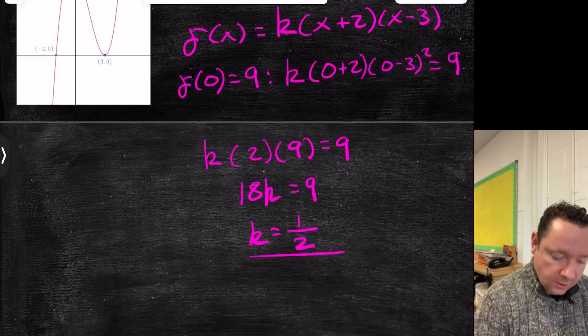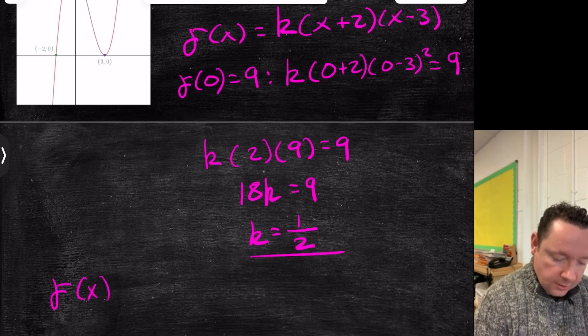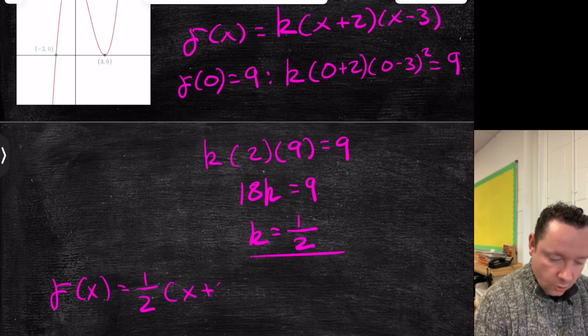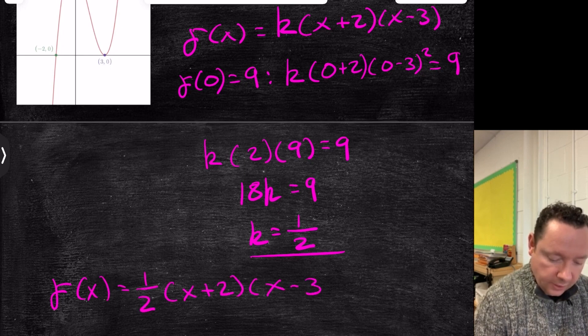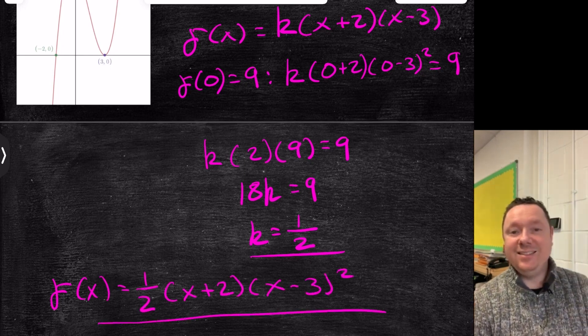So now we just write our answer. f of x is equal to 1 half of x plus 2, x minus 3, all squared. And that's just done.